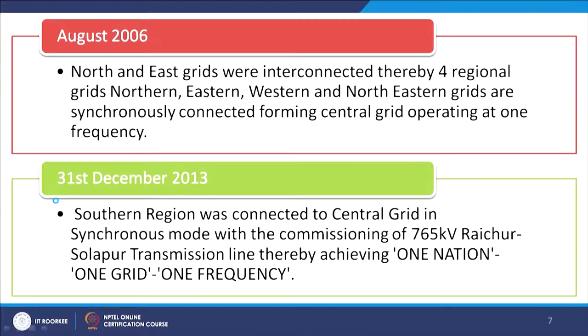On 31st December 2013, the southern region was connected to the central grid in synchronous mode with the commissioning of the 765 kV Raichur-Solapur transmission line, thereby achieving one nation, one grid, one frequency. The energy grid of India achieved one frequency, one grid in December 2013.